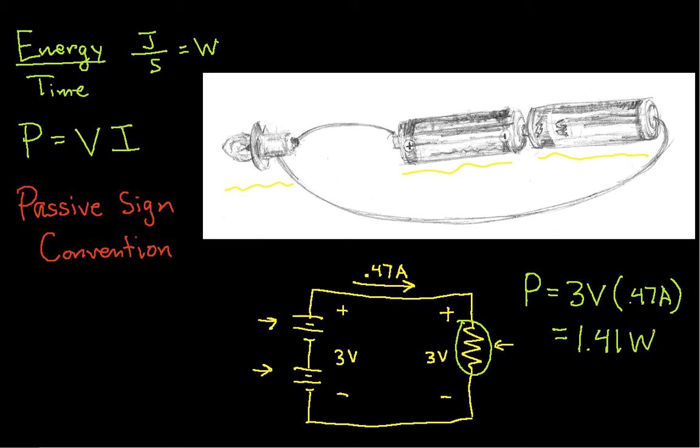The idea behind the passive sign convention is the following. If I have a current that is flowing through a component from a positive potential to a negative potential, from a higher potential to a lower potential, then I write P equals VI. And if the current is indeed flowing from higher potential to lower potential, I get a positive value. A positive value means that the component is dissipating power.